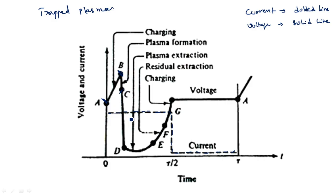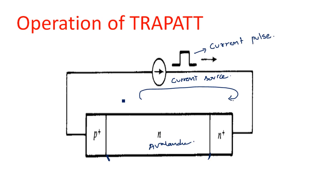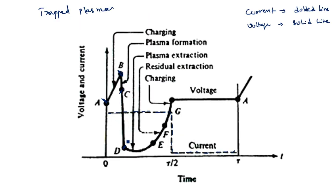From point C to D, the plasma is sustained and a high amount of current continues to flow. The voltage decreases because as the current increases the diode acts as a short circuit, with holes drifting in one direction and electrons drifting in the opposite direction through the junction.